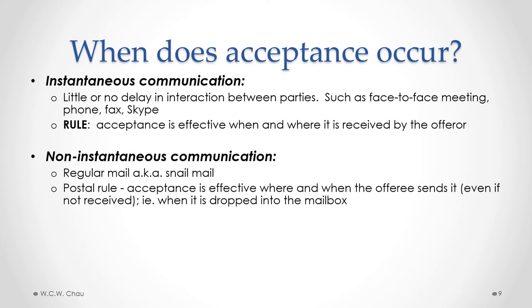The other type is non-instantaneous communication. The biggest example is regular mail, also known as snail mail. The courts have developed a specific rule dealing with snail mail called the postal rule. The postal rule says that acceptance is effective where and when the offeree sends it. So even if the letter has not been received yet, when the offeree drops the letter into the mailbox or drops it off at the post office, that's when acceptance is deemed to have occurred — not when the letter is actually received by the offeror.